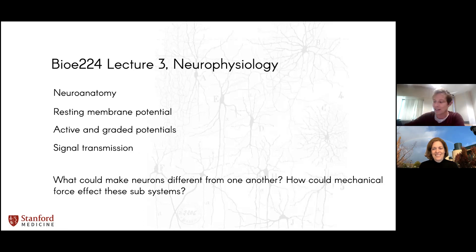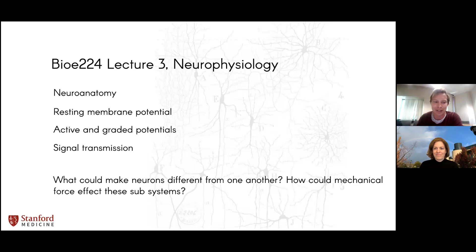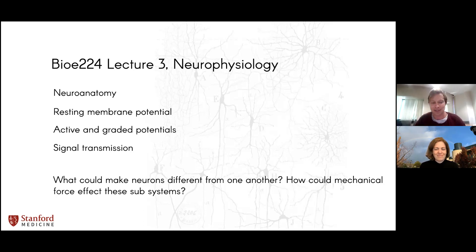Because this is an ultrasound neuromodulation course, I wanted to start by asking: what makes neurons different from each other when you think about all these features, and if they are different, how would mechanical forces differently affect these systems? So as we walk through this, try to imagine ultrasound passing through all of these little bits and how that might alter everything. This is a really conceptual lecture — I'm trying to give you a feel for the neuron in the brain.